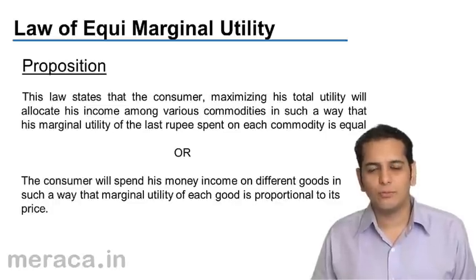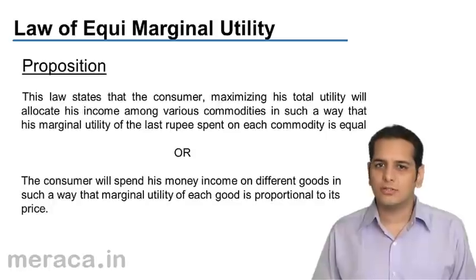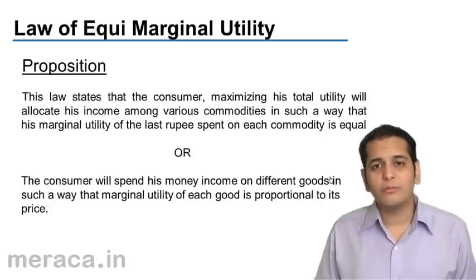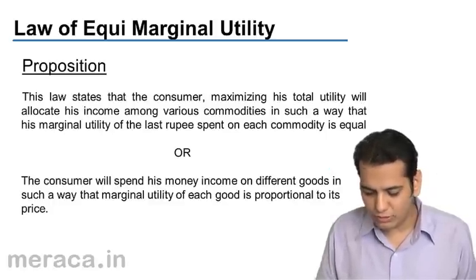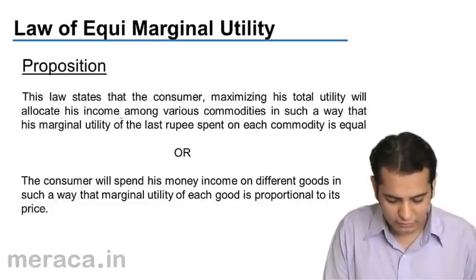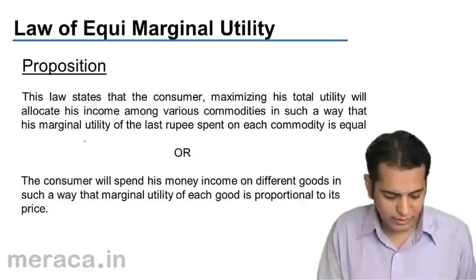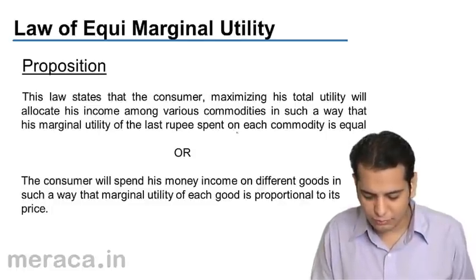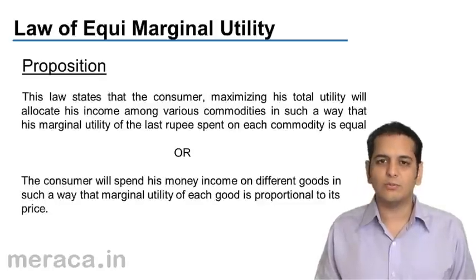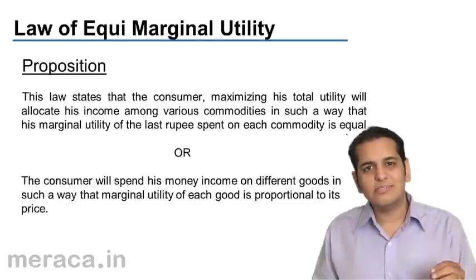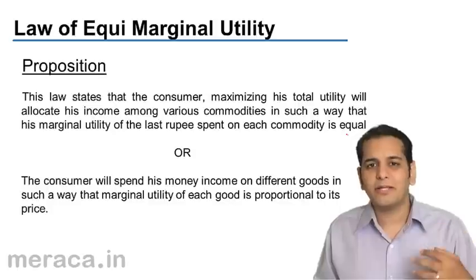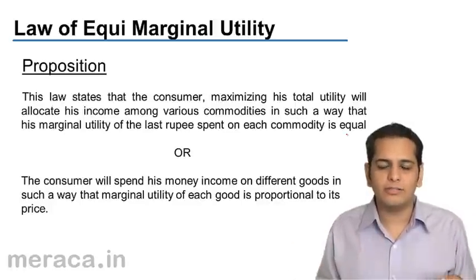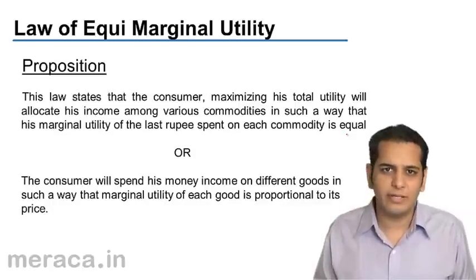In this segment, we will study what is the law of equi-marginal utility. This law states that the consumer maximizing his total utility will allocate his income among various commodities in such a way that his marginal utility of the last rupee spent on each commodity is equal. This law is different from the laws we've already done because now we are bringing in a second commodity — not studying only one commodity at a time.